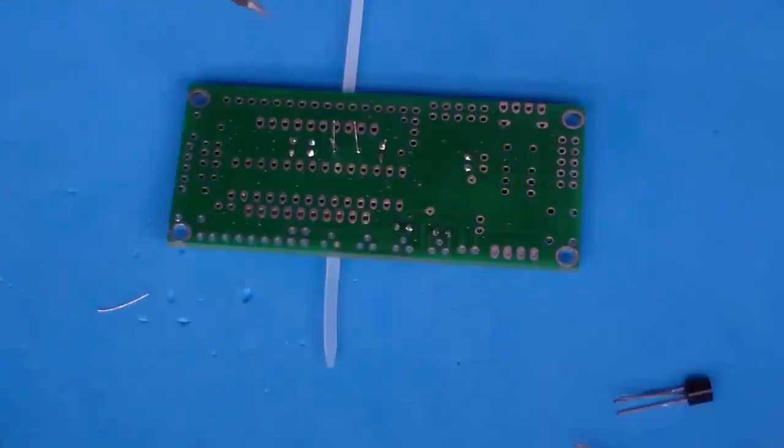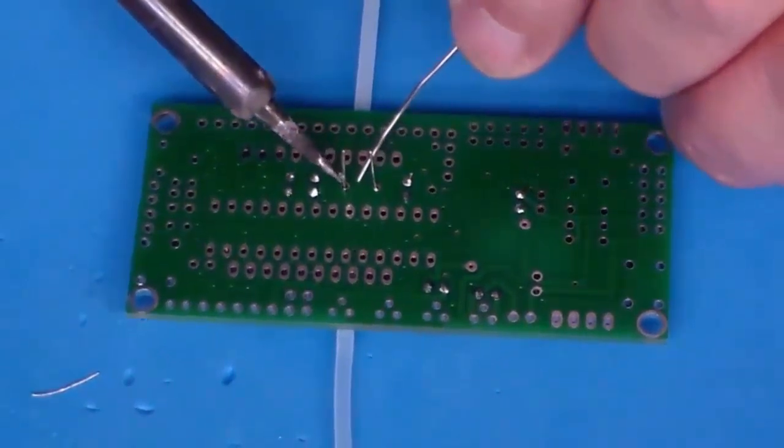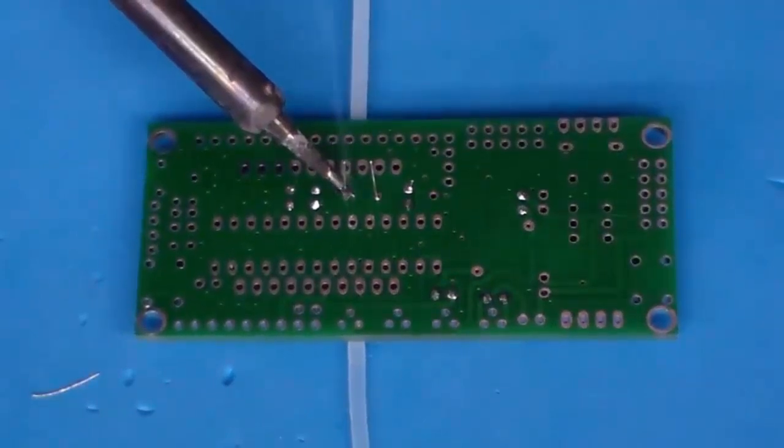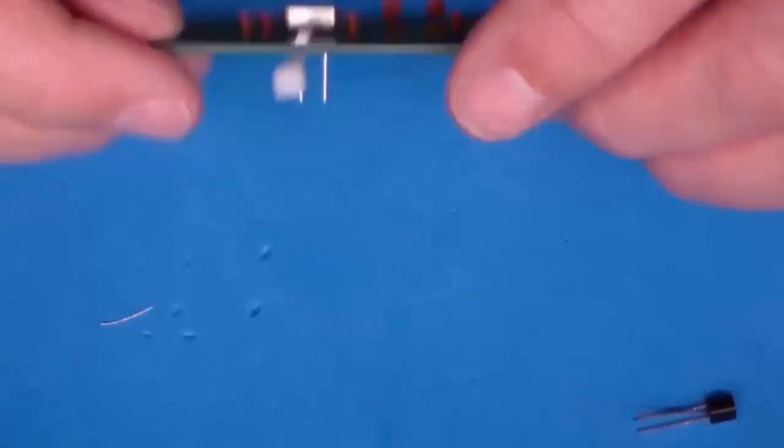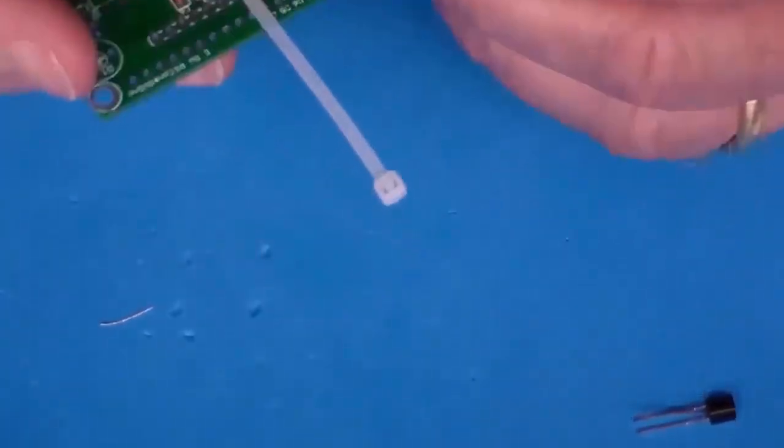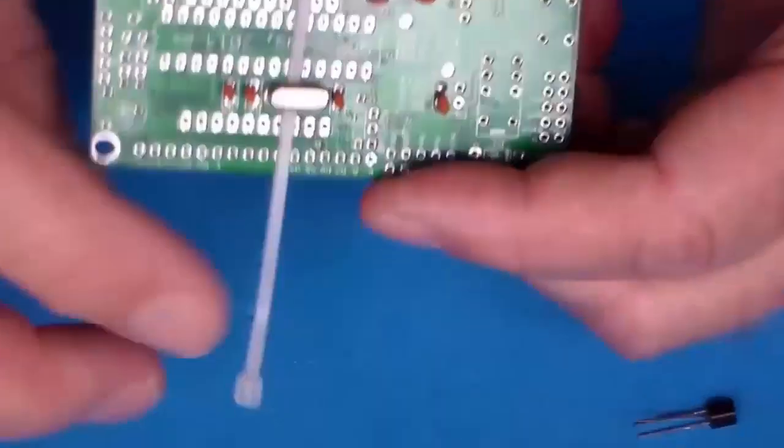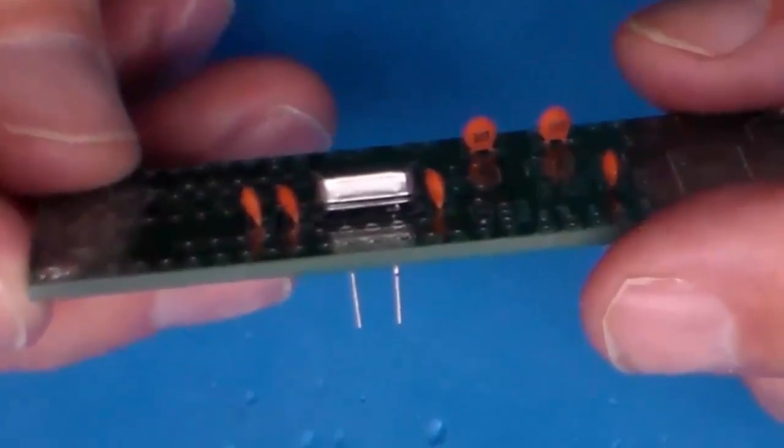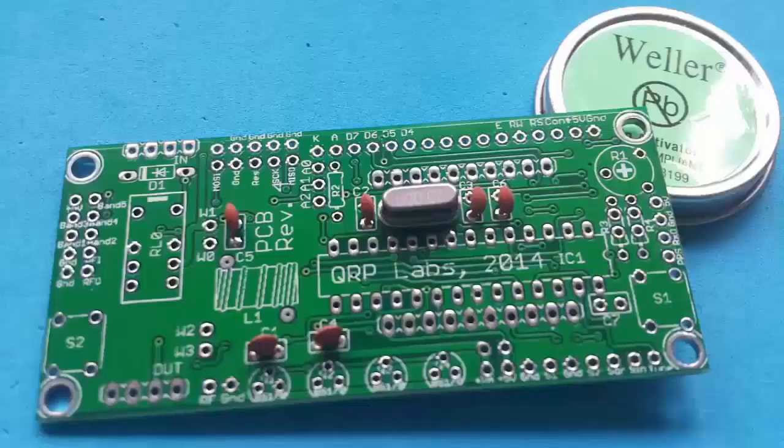I'm soldering the crystal in right now. I've got one lead in. I've checked it on the other side of the board. We'll finish by putting the second one in. When I install crystals on a board, I like to stand the base of the crystal up a little bit off the board, which is why you see here I have this little piece of tie wrap in here as a spacer. I just slide that out and that gives me a little gap between the case of the crystal and the board. I just like to do it that way.